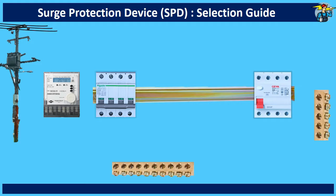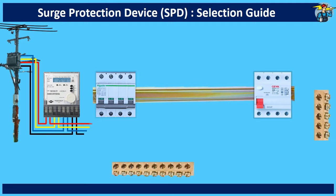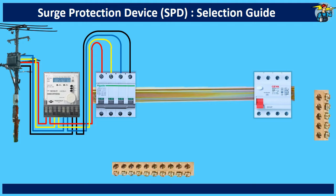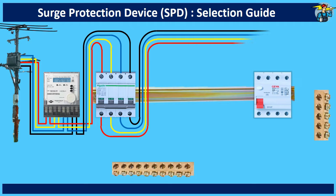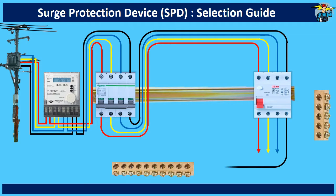From the distribution transformer, power supply is connected to the electricity meter first. After the meter, the line is connected to the main circuit breaker. From the main breaker, the lines should be connected to the RCD. From the RCD outer terminals, cables will be joined to more breakers, where equipment had been connected.